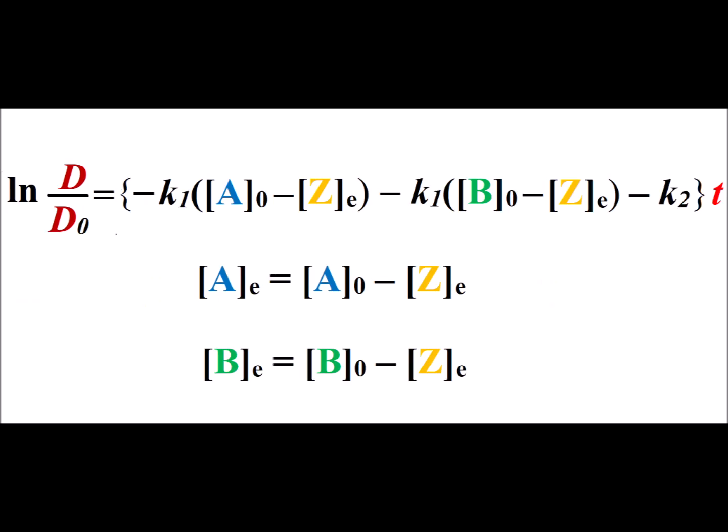Here we divide through by D sub zero, and we also note that the equilibrium concentration of a, a sub e, is its initial value minus the equilibrium concentration of z. The equilibrium value for b, b sub e, is equal to its initial value minus the equilibrium value of z. Notice that we have those expressions ready to go inside the parentheses in our expression.